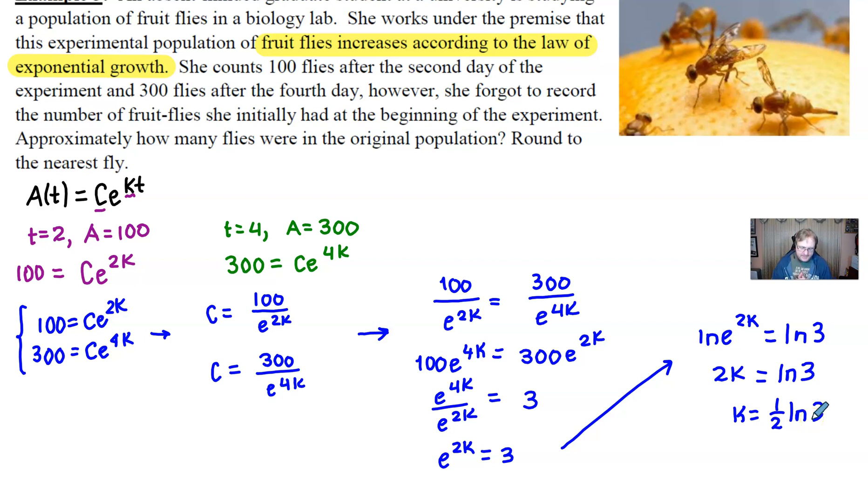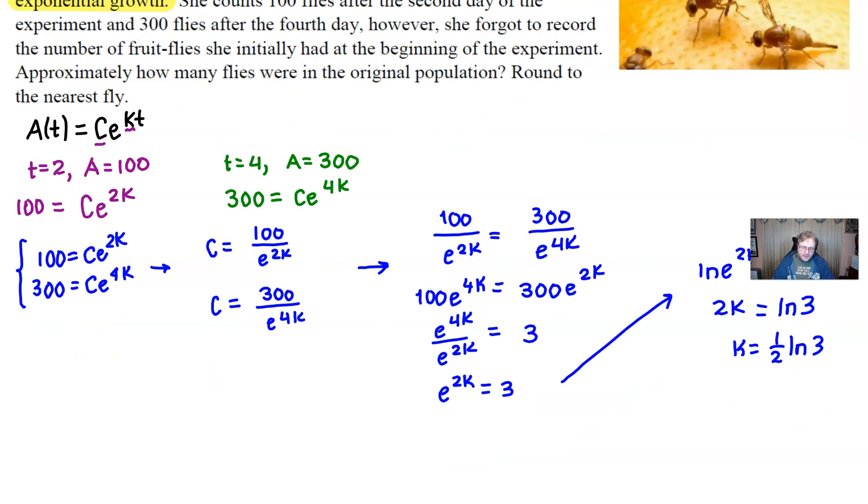And so k would be 1/2 natural log of 3. We don't want to decimalize that if we can absolutely avoid it. And we can. I think we can continue to work with our A(t) equation in a little bit more accuracy if we use that particular k. And so we have A(t) equaling C times e to the 1/2 natural log of 3 times t multiplied by t power.